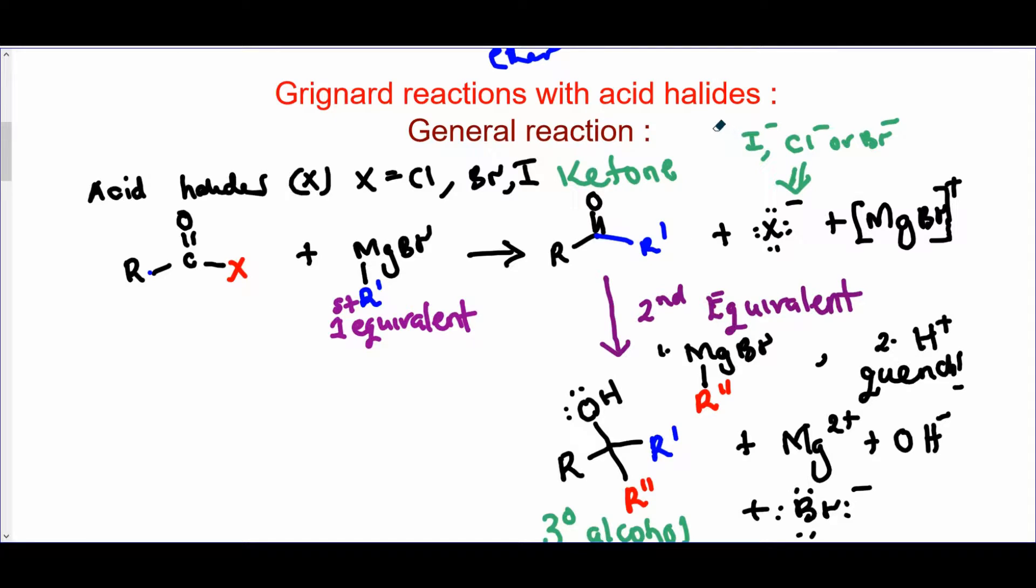Now, for acyl halides. This is the general structure where the X could be a chloride, a bromide, or iodine. When you react with the Grignard, you guys remember that this carbon is partially positive. And in this case, it is even more activated because this is an electron withdrawing group. Halogens are electron withdrawing groups, so they make this carbon even more positively charged.